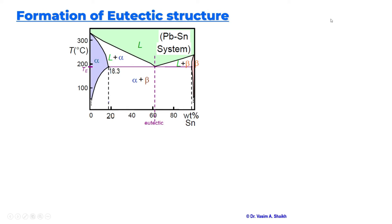The eutectic reaction is happening here where the liquid is transforming into alpha and beta phases. We know that exactly at the eutectic reaction, just below the eutectic reaction, there will be a lamellar layer forming of alpha and beta. Now let us see how and why this lamellar layer forms.